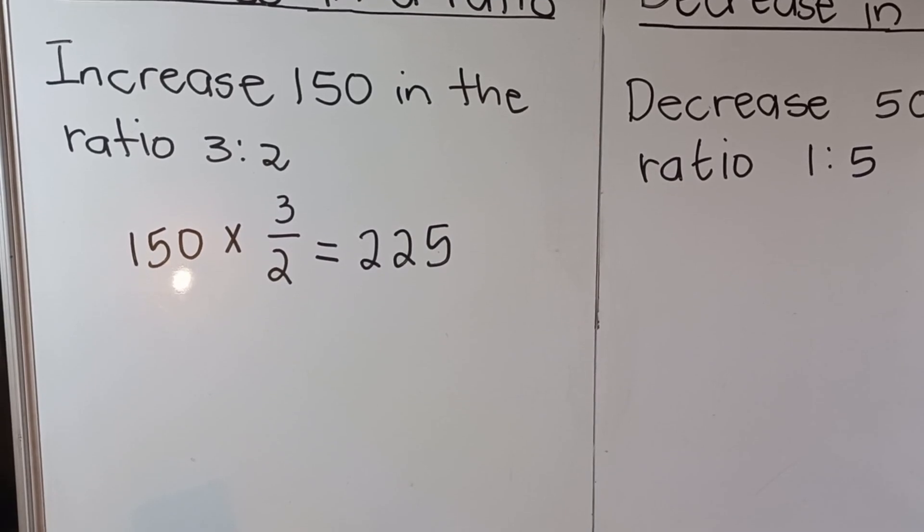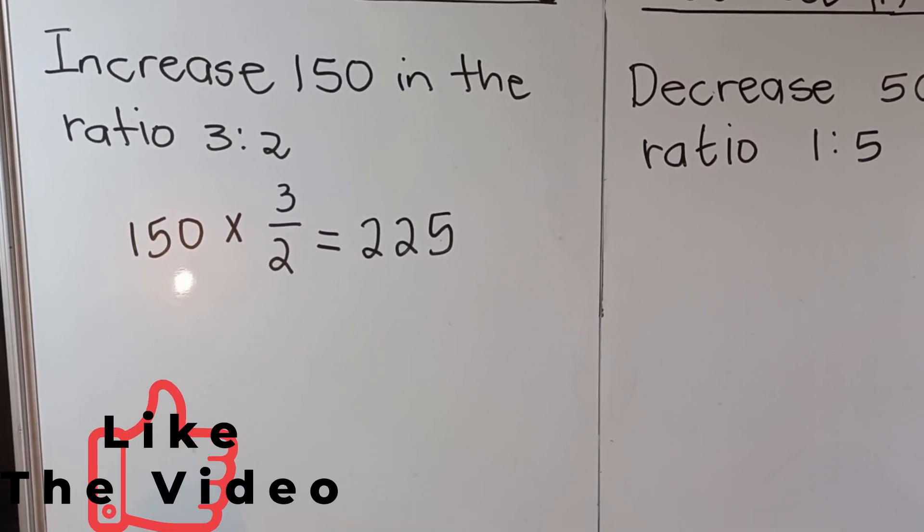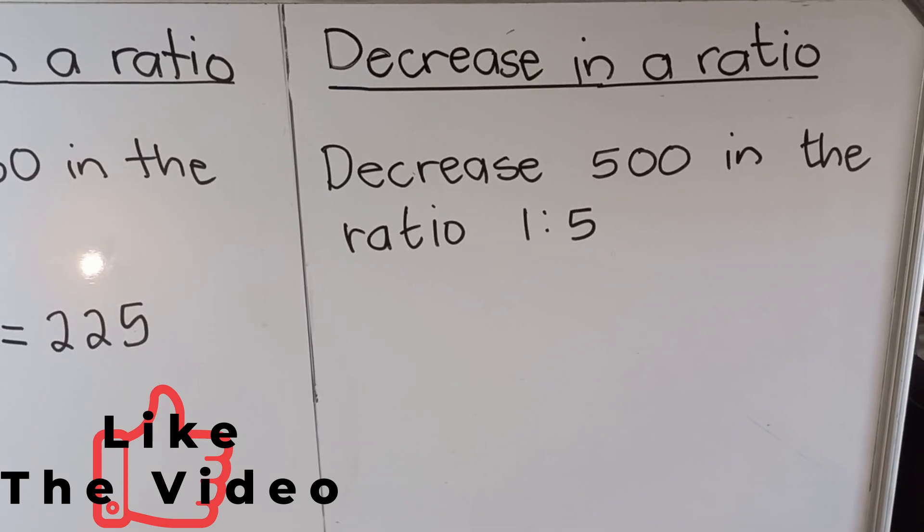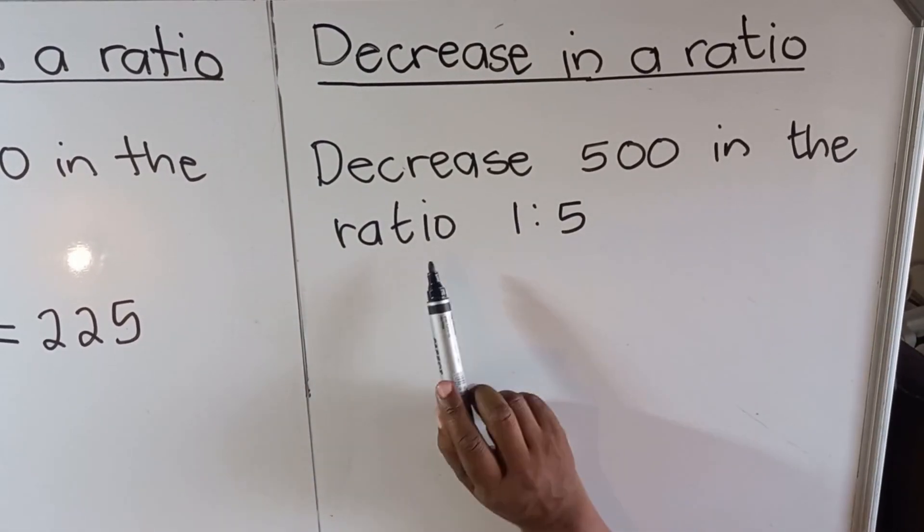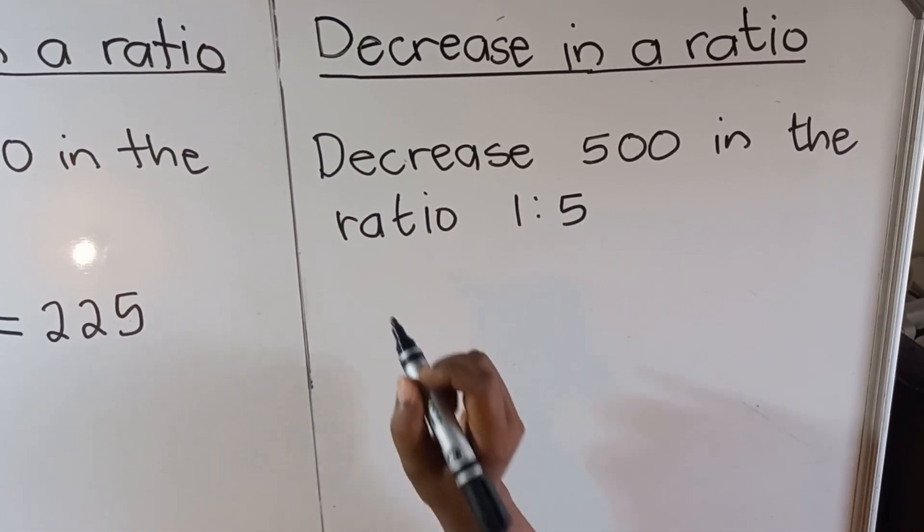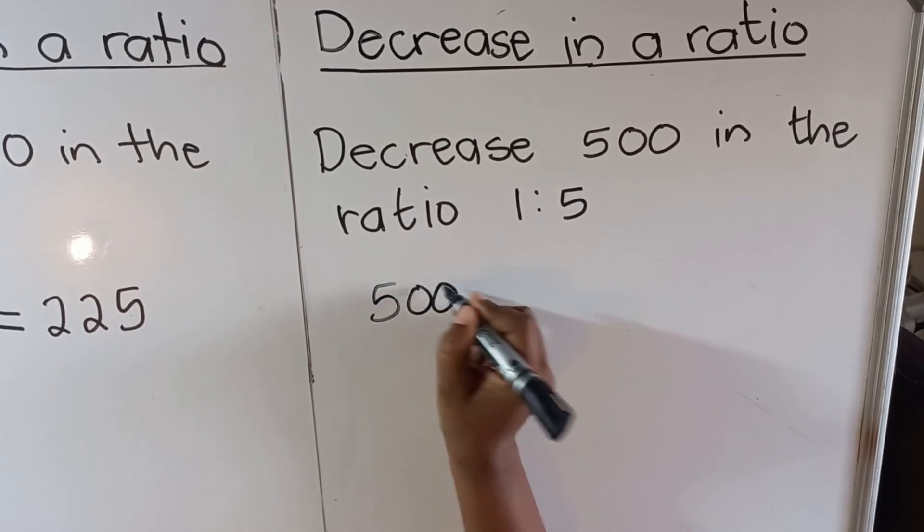Okay, so let's look at when you decrease in a ratio. Let's look at the question where we decrease in a ratio. Our question says decrease 500 in the ratio 1 is to 5. So it will be 500 multiplied by.